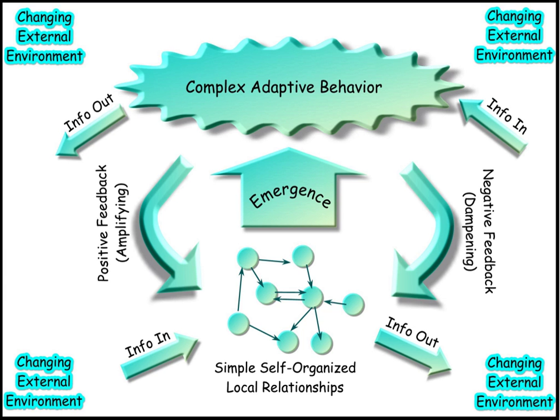Further examples include ecosystems, social networks, power grids, animal swarms, traffic flows, social insect colonies, the brain and the immune system, and the cell and the developing embryo. Human social group-based endeavors such as political parties, communities, geopolitical organizations, war, and terrorist networks are also considered complex adaptive systems. The Internet and cyberspace — composed, collaborated, and managed by a complex mix of human-computer interactions — is also regarded as a complex adaptive system.